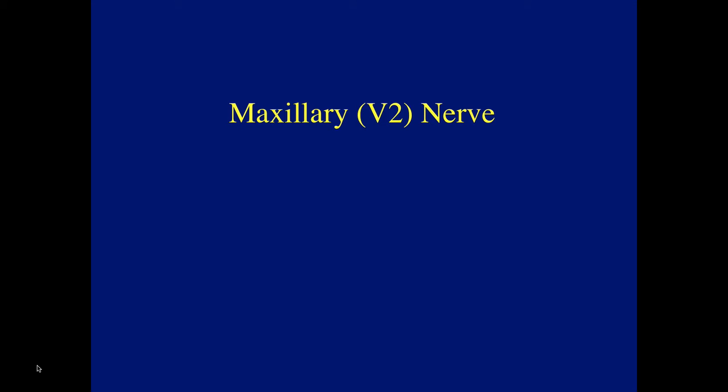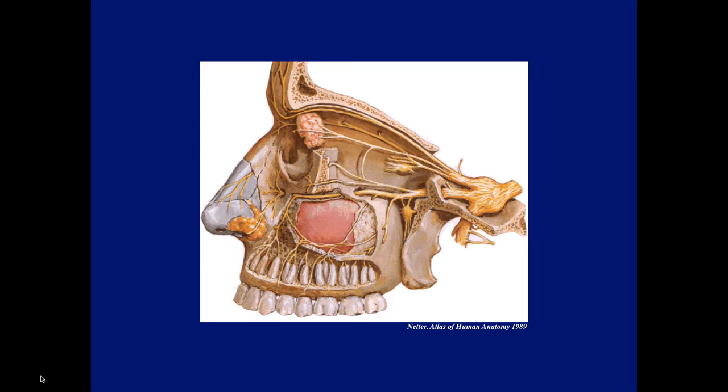Today I'll spend quite a bit of time describing the complex and anatomic relationships of the maxillary nerve. Studying the complex anatomy helps analyze the pathologic manifestation of this nerve. Last week I talked about the ophthalmic division of the trigeminal nerve, and today I'll be talking about the maxillary, or the second division of the trigeminal nerve.